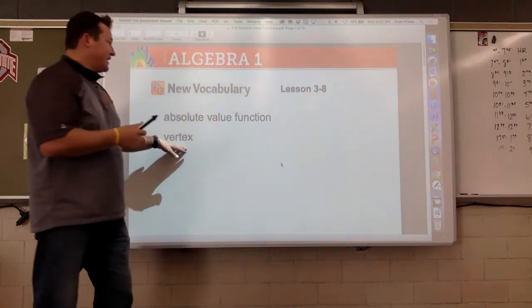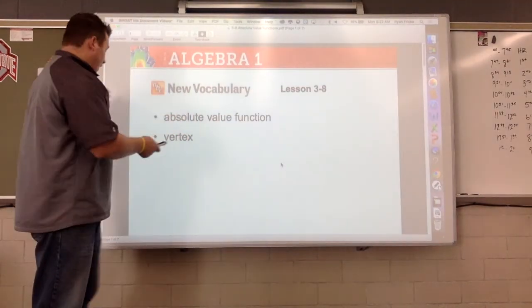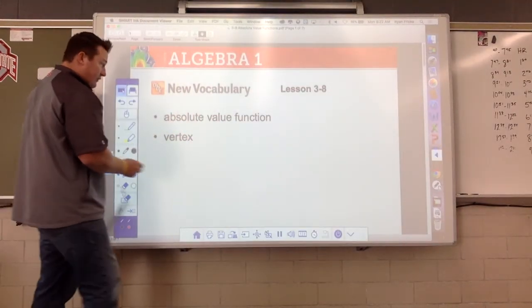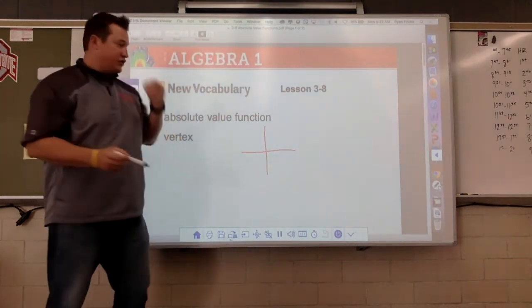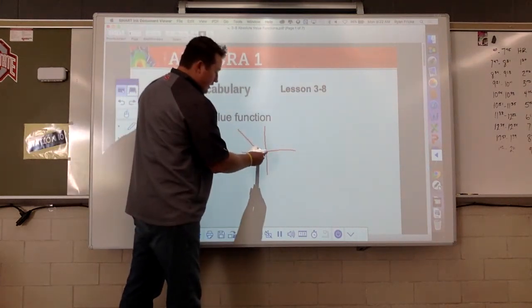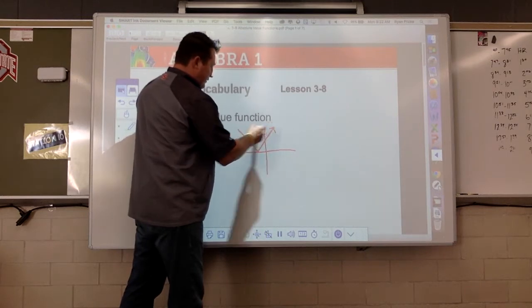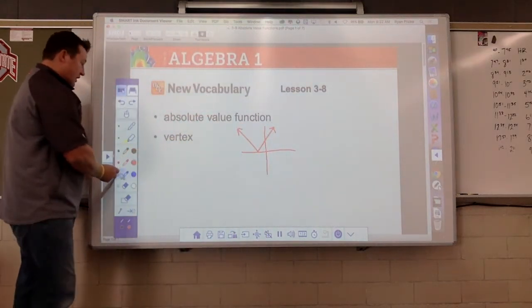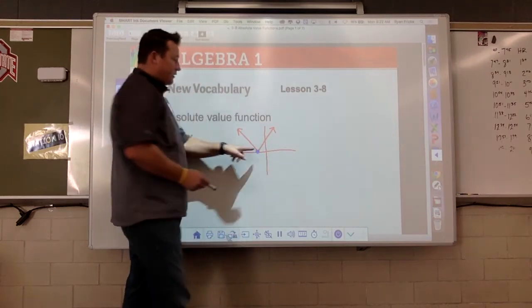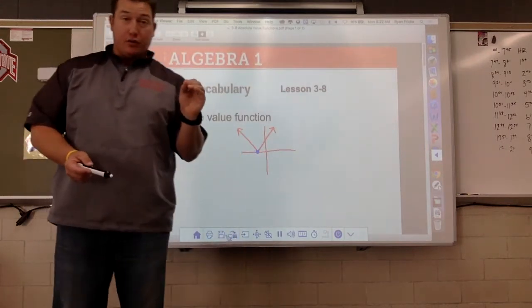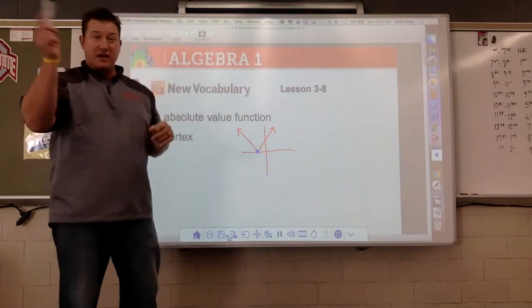Again, vertex, this is just gonna be the lowest or the highest point as we'll find out on our absolute value functions. Remember these functions, they take that V shape. They might look something like that. In this case, the vertex is gonna be right there. That's gonna be the lowest point, absolute minimum. That was like 2.7.